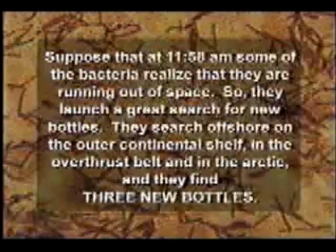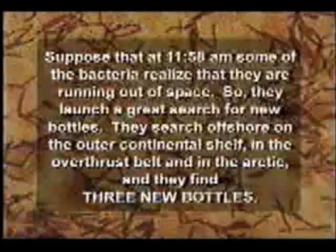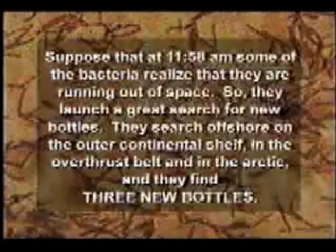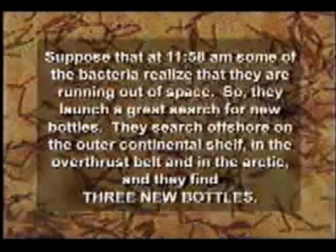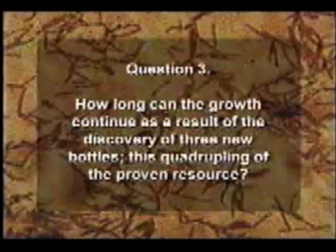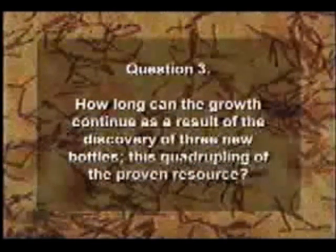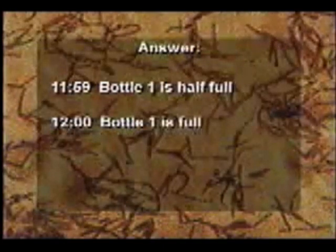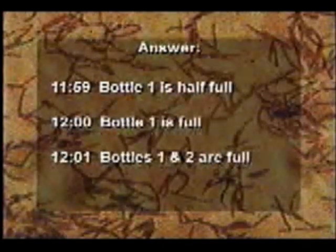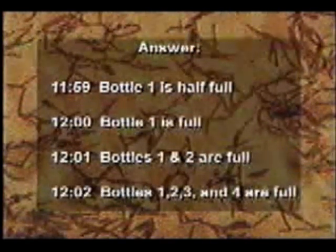Suppose that at two minutes before 12 some of the bacteria realize they're running out of space, so they launch a great search for new bottles. They search offshore on the outer continental shelf, the overthrust belt, and in the Arctic, and they find three new bottles. That is a colossal discovery — three times the amount of resource they ever knew about before; they now have four bottles where before the discovery there was only one. Surely this will give them a sustainable society? How long can the growth continue? At 12 noon, one bottle is filled, three to go. At 12:01, two bottles are filled, two to go. At 12:02, all four are filled — and that's the end of the line.